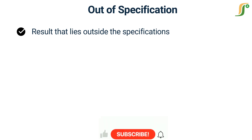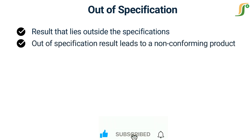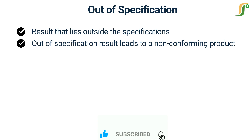First of all, let us understand the out-of-specification and causes of its occurrence. An out-of-specification result is simply a result that lies outside the specifications it is required to conform to. When you conduct a quality control test on a finished product or raw material and your test result falls outside official specifications, you should assign it as an out-of-specification result and conduct an investigation. A confirmed out-of-specification result leads to a non-conforming product.